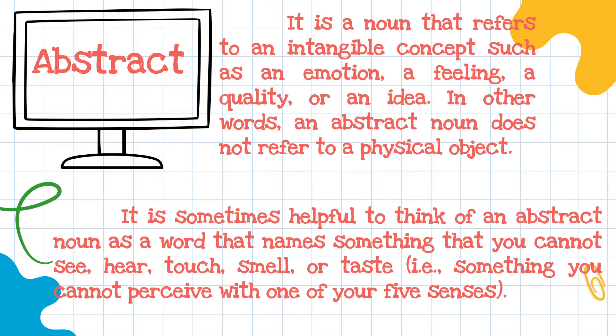Abstract. It is a noun that refers to an intangible concept such as an emotion, a feeling, a quality, or an idea. In other words, an abstract noun does not refer to a physical object. It is sometimes helpful to think of an abstract noun as a word that names something that you cannot see, hear, touch, smell, or taste.